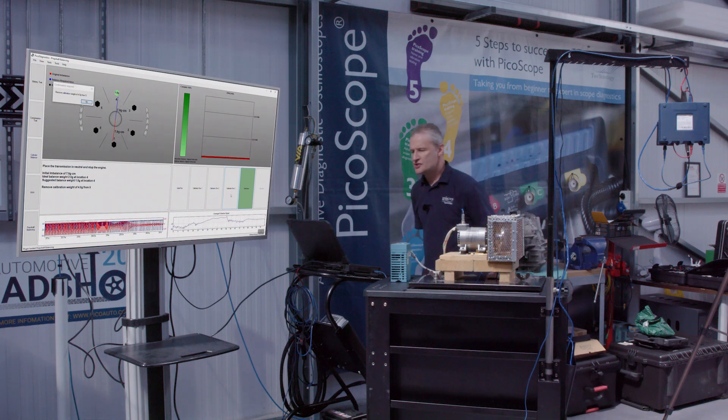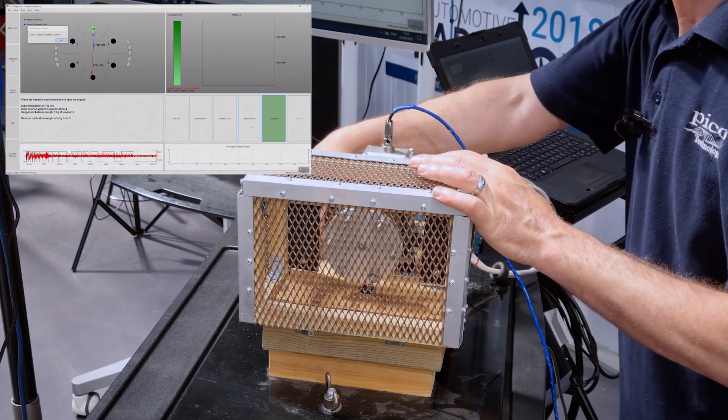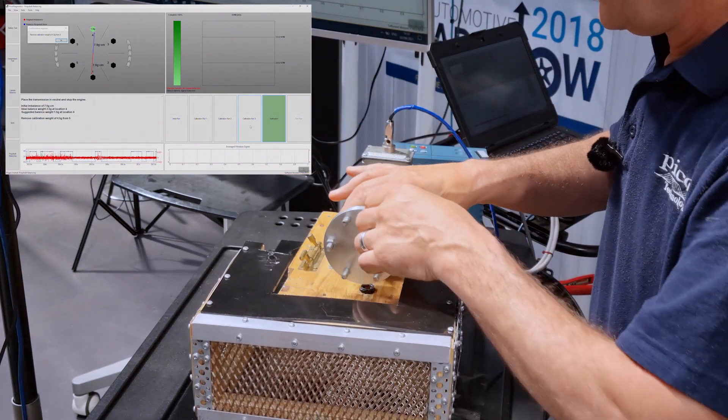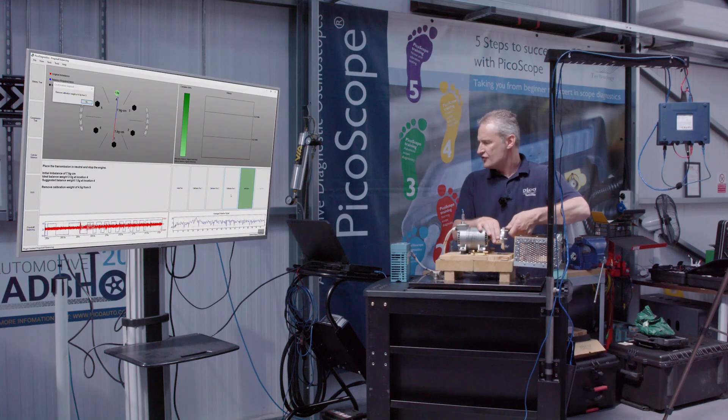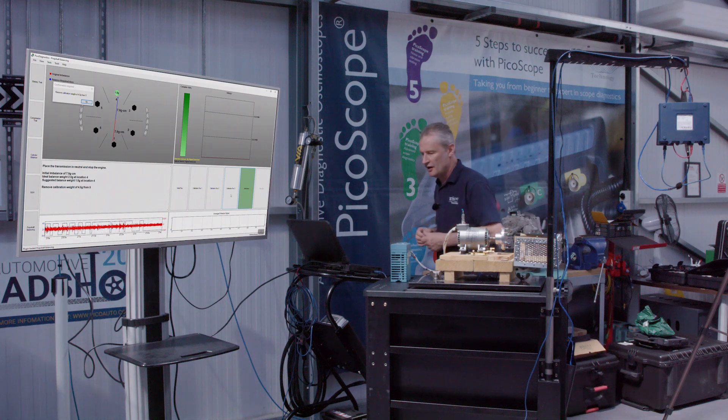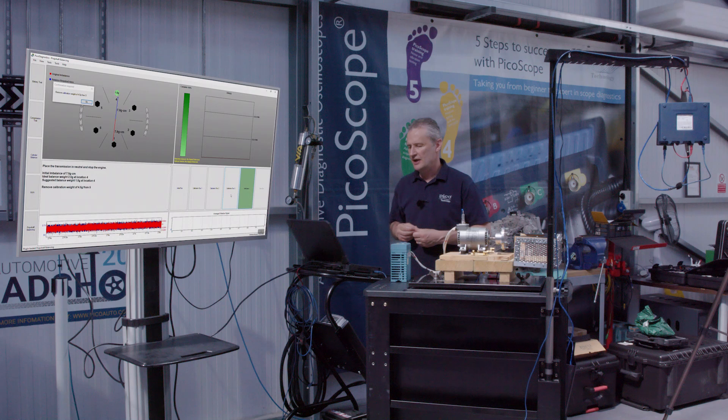So, the first instruction from the software, remove the calibration weight of 4.5 gram from bolt number five. So, let's do that straight away.